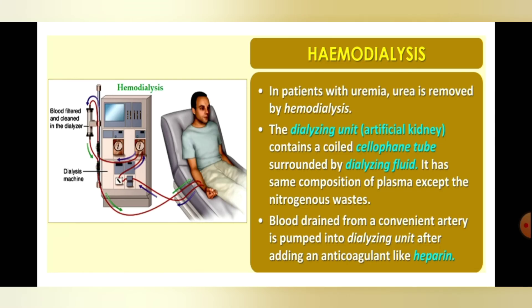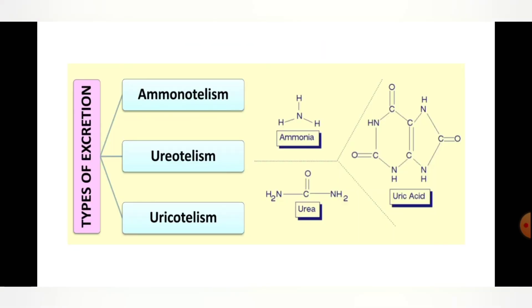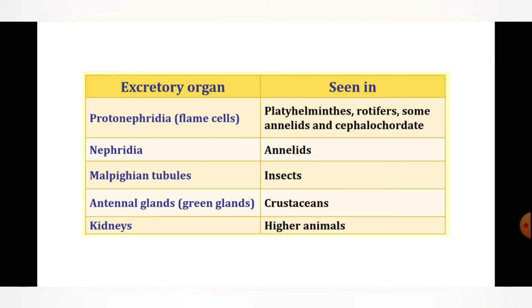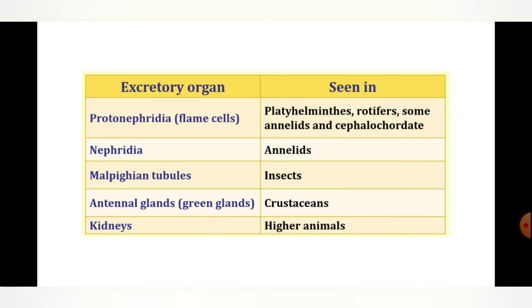In summary, Part 5 covered dialysis and kidney transplantation. We reviewed three types of excretion: ammonotelism, ureotelism, and uricotelism, and the corresponding organism types. We looked at the structures of ammonia, urea, and uric acid, and the excretory organs — proto-nephridia or flame cells in platyhelminthes, rotifers, annelids and cephalochordates; nephridia in annelids; Malpighian tubules in insects; antennal glands in crustaceans; and kidneys in higher animals.